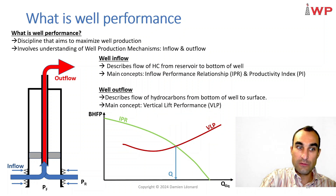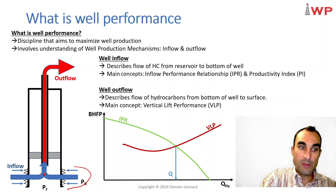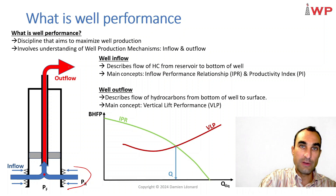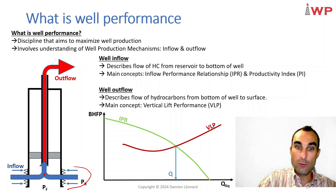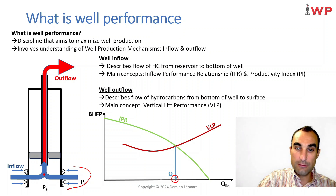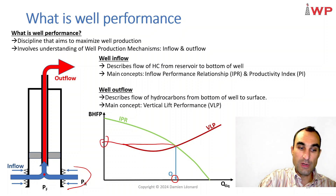For a well to flow to surface, you need the pressure required to flow your hydrocarbons from your reservoir to the bottom of your well to be equal to the required pressure to flow your hydrocarbons from the bottom of your well to the surface. So you basically need the IPR and the VLP to be equal, which is what happens when these two curves intersect. At this intersection, you will have a specific flow rate and a specific bottom hole flowing pressure.